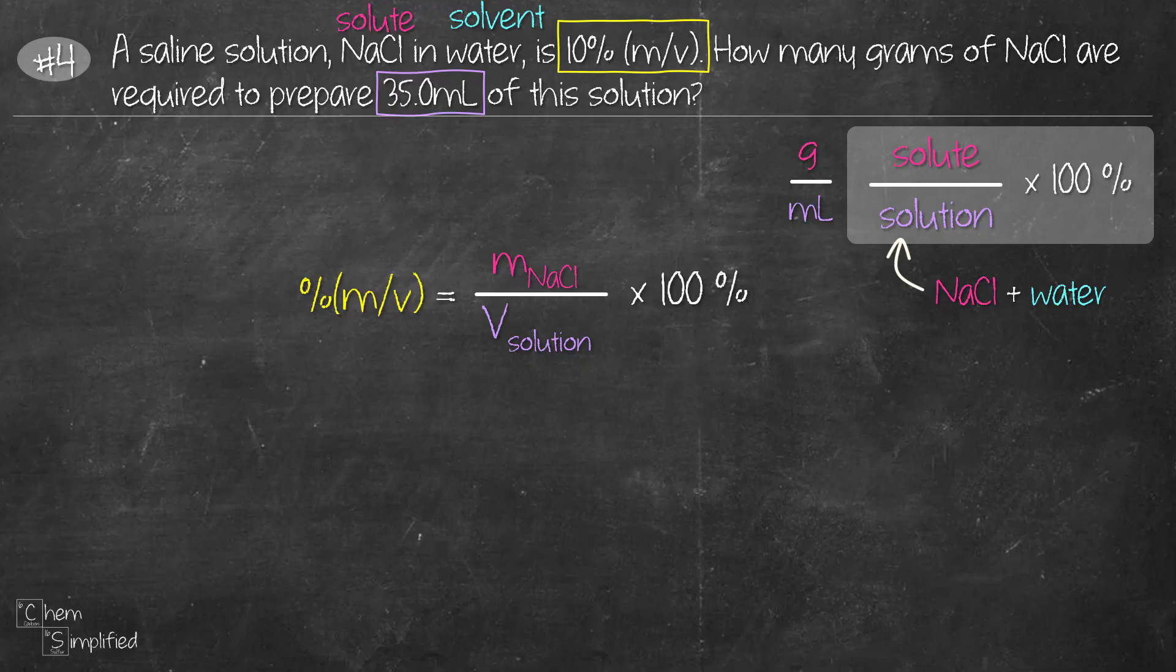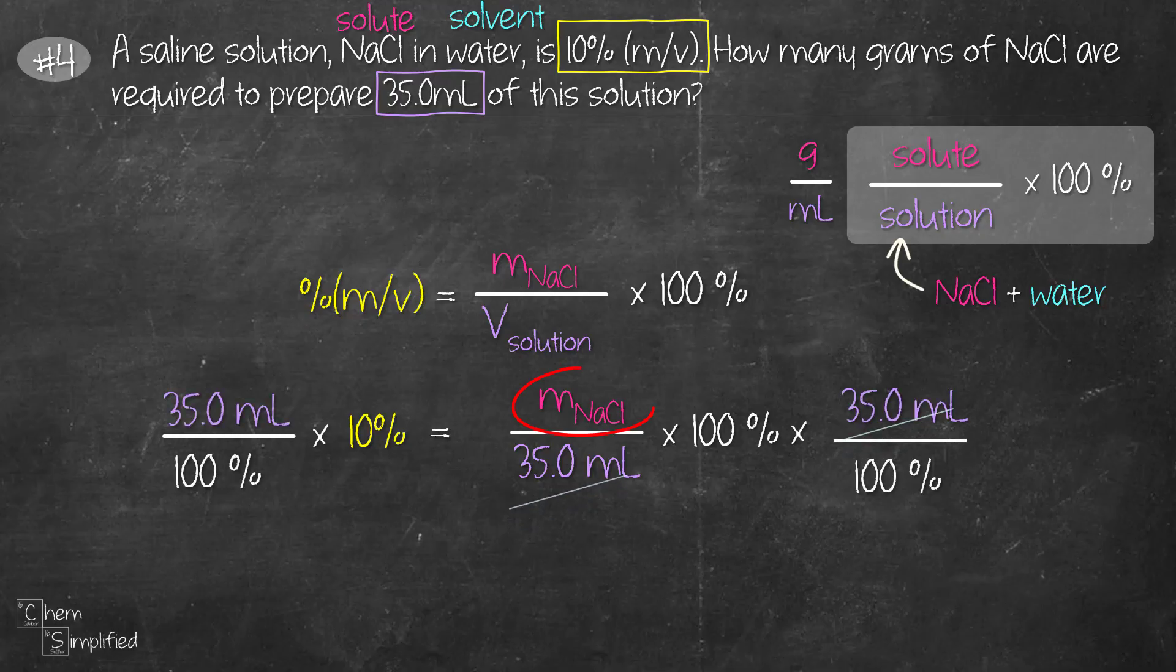So back to this question. So the 10 percent is equals to the mass of NaCl, which we don't have, divided by 35 ml times 100. We do the math to solve for the mass of NaCl and that works out to be 35 divided by 100 times 10. So that's equals 3.5 grams for the mass of NaCl.